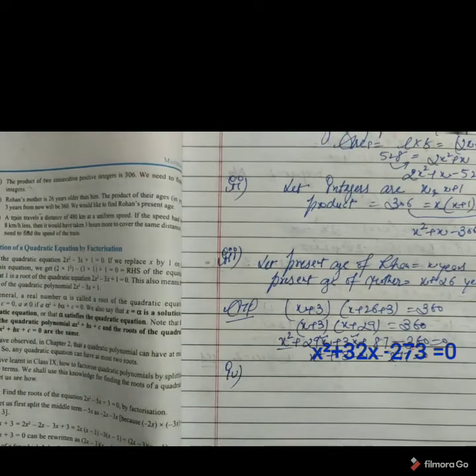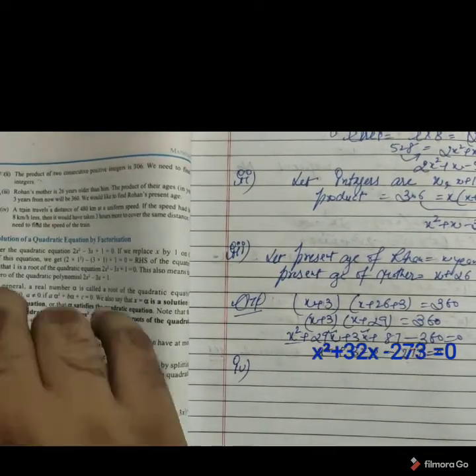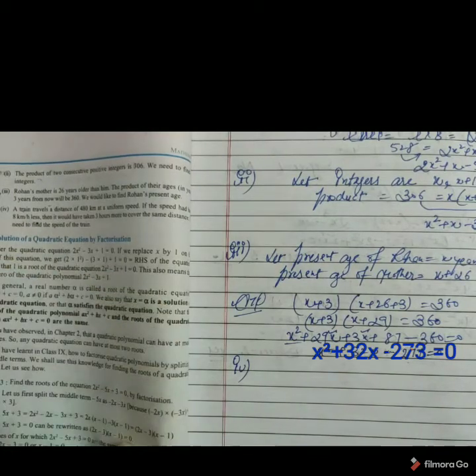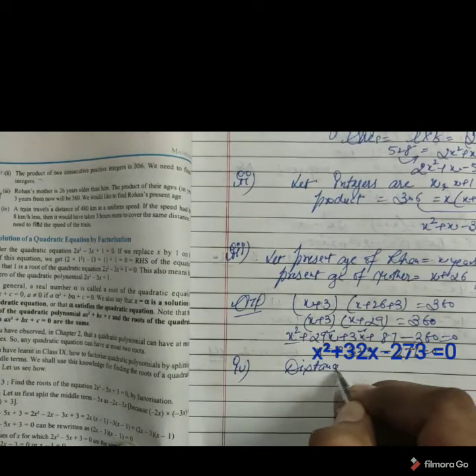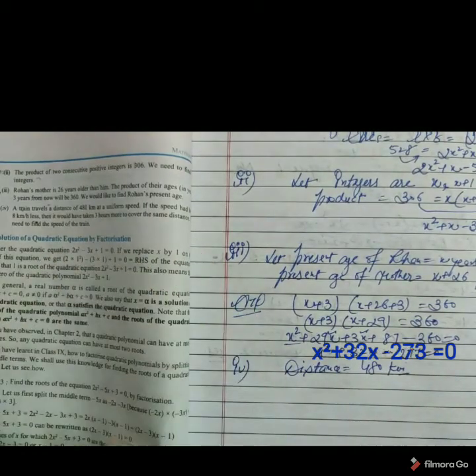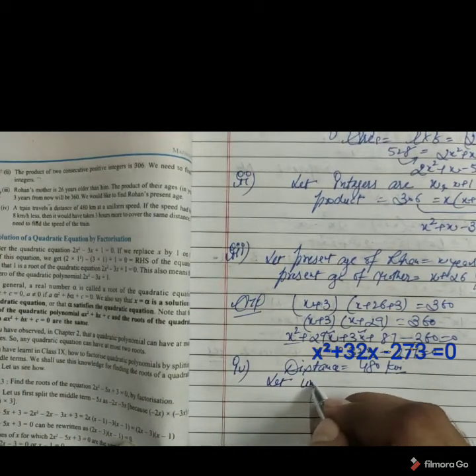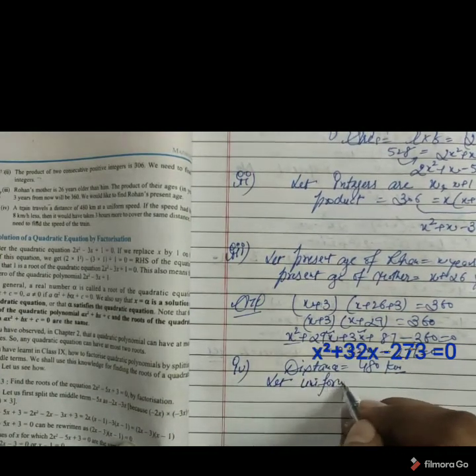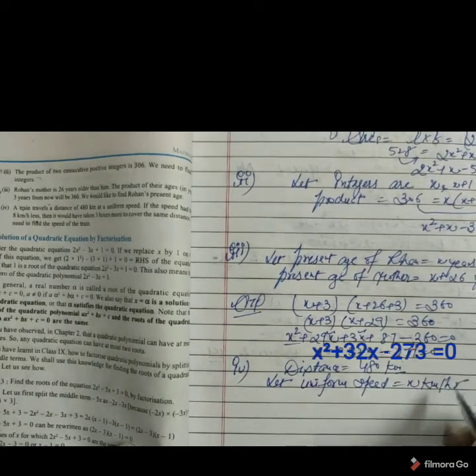Now we are going to start last and final part of the question of the exercise also. A train travels a distance of 480 km. We have given here distance 480 km. With the uniform speed. Means normal speed is not given. Let uniform speed, it is given by x km per hour.